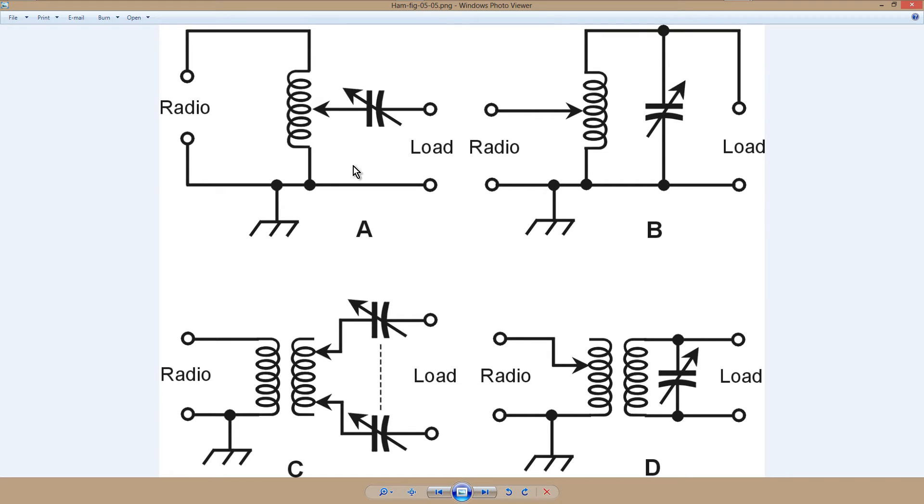So here are the designs. At A, this is in case you end up with a low impedance, a low value of resistance in your load. If that situation exists, then this type of tuner is best, where you tap the coil on the load side of the tuner.